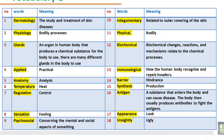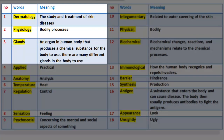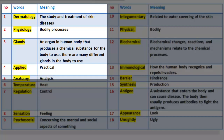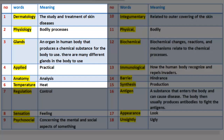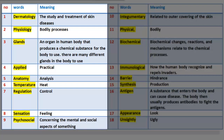Vocabulary 1. Number 1: Dermatology — the study and treatment of skin diseases. Number 2: Physiology — bodily processes. Number 3: Glands — an organ in the human body that produces a chemical substance for the body to use. Number 4: Applied — practical. Number 5: Anatomy — analysis. Number 6: Temperature — heat. Number 7: Regulation — control.